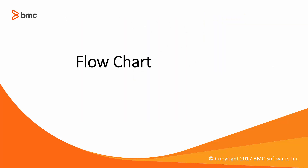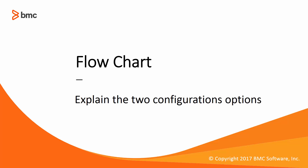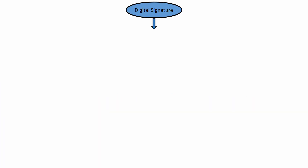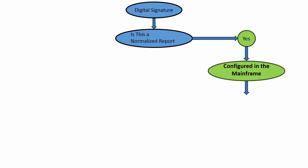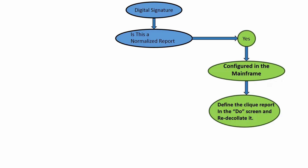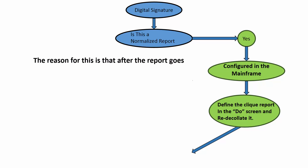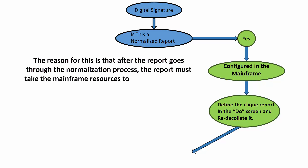I have created a flowchart that will explain the two configuration options. The first thing the digital signature process needs to know is: is this a normalized report? If the answer is yes, it means that the click report being used is configured in the mainframe. The definition of the report click is done in the DO screen. After defining the report click, an existing normalized report will require re-decolation. The reason for this is that after the report goes through the normalization process, the report must take the mainframe resources to the delivery server, which includes the report click.